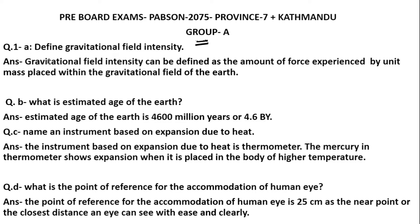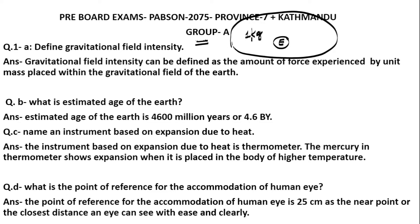Question number 1A: How do you find gravitational field intensity? Gravitational field intensity is defined for a planet or earth. Earth has a gravitational field. If you place a body of 1 kg mass within the gravitational field of the earth, the force experienced by that body is the gravitational field intensity.